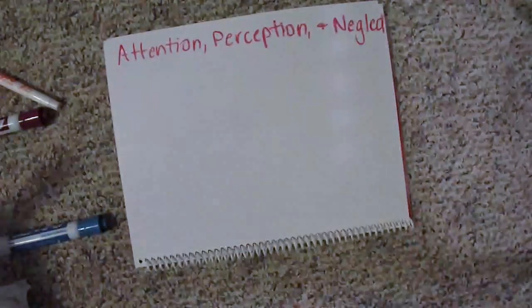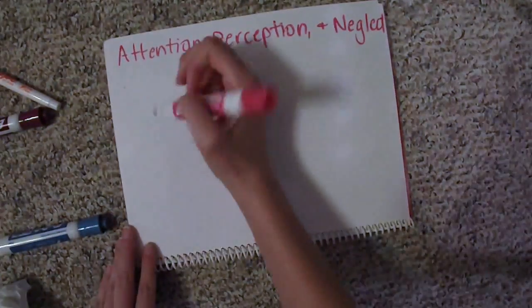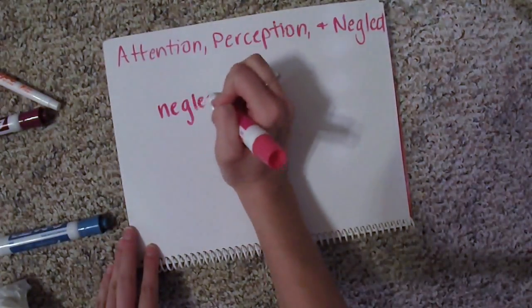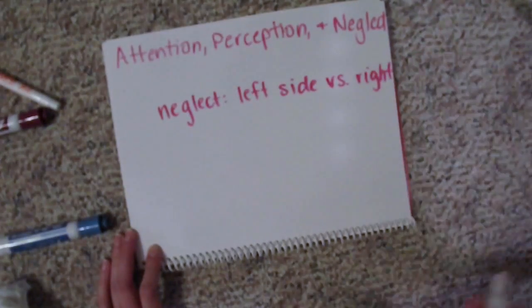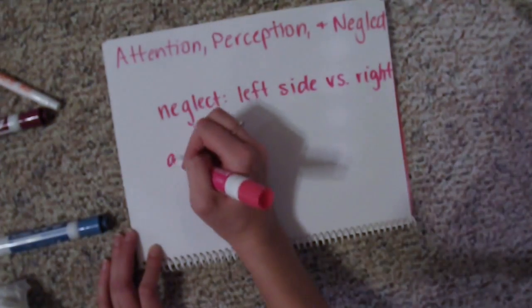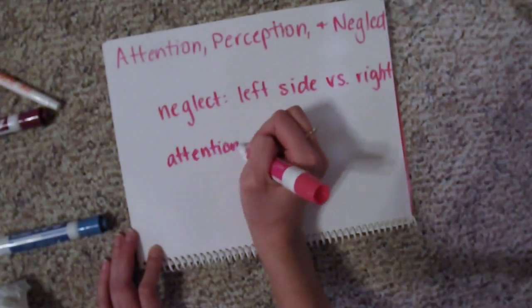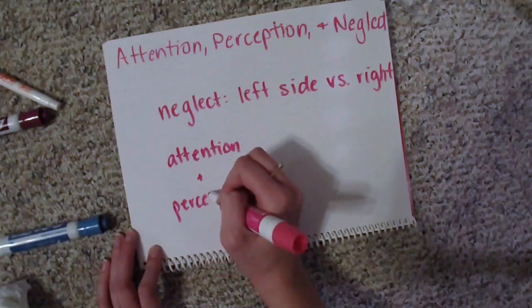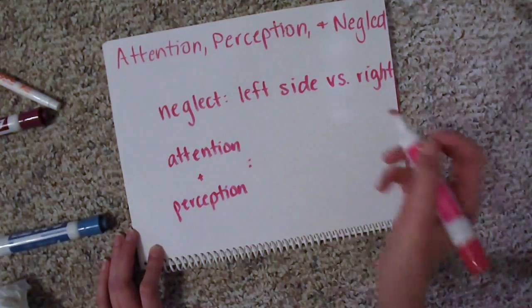Treatment for neglect can include having the patient name objects on their left and right sides, listen to the clinician's voice from their left or right side and identifying the source, etc.